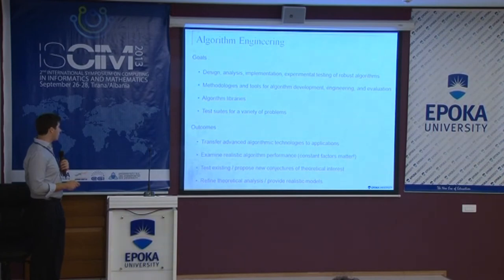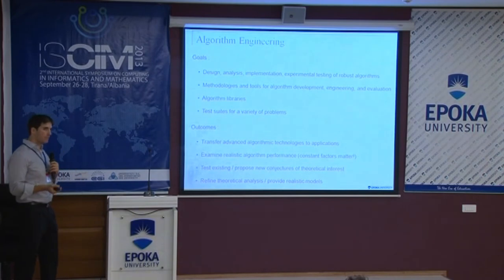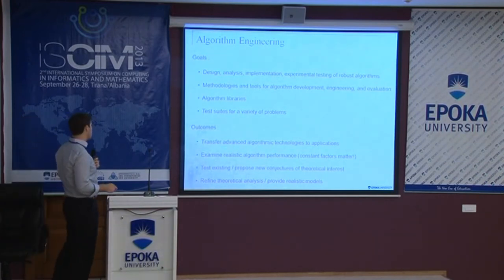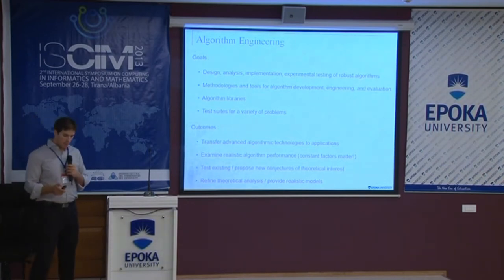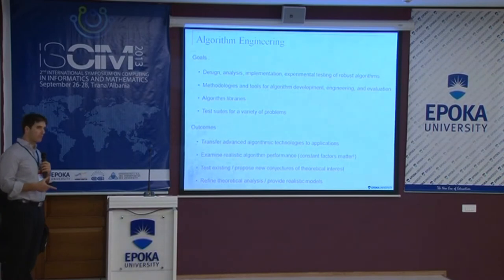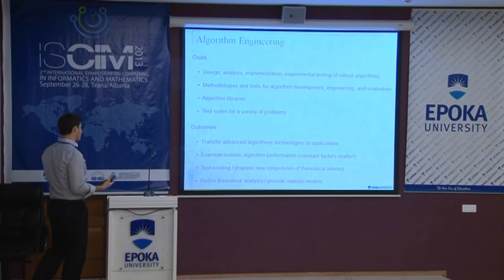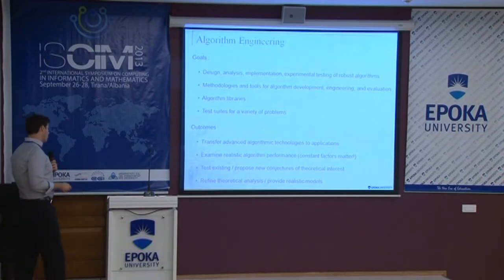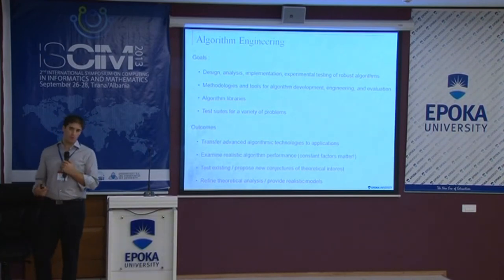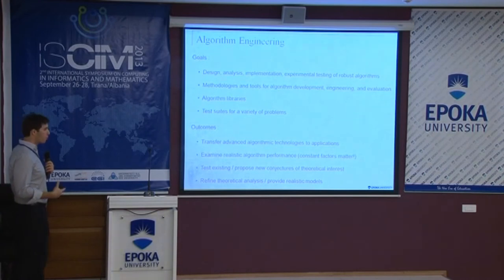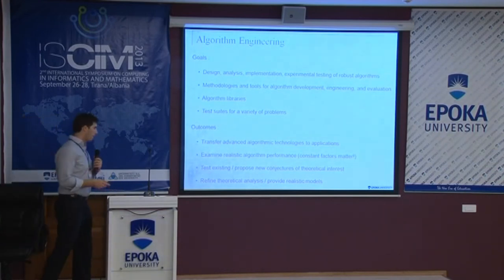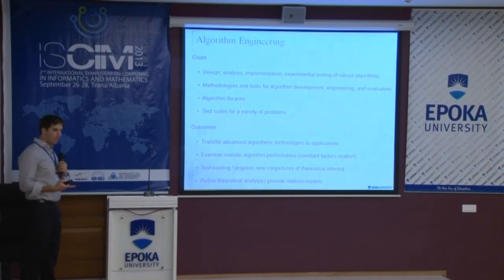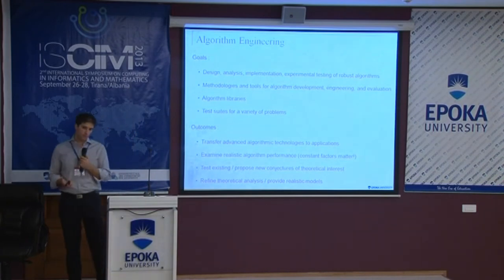Beyond producing actual source code, there are other equally important side outcomes. The end result we want is to transfer advanced technologies from theory to practice, and to give people a real sense of the performance of an algorithm in practice. The observation is that constant factors matter too much. Experimentation also helps people working in theory — we can test conjectures or propose new ones based on experimental evidence.